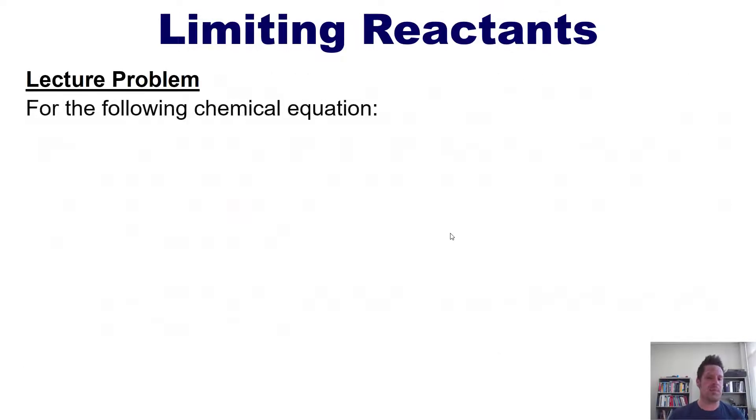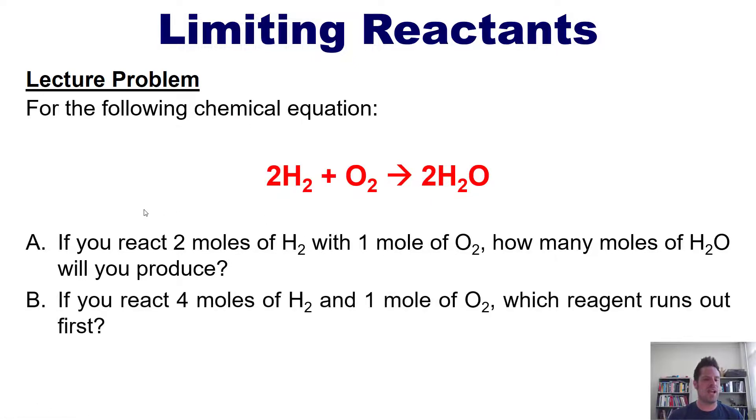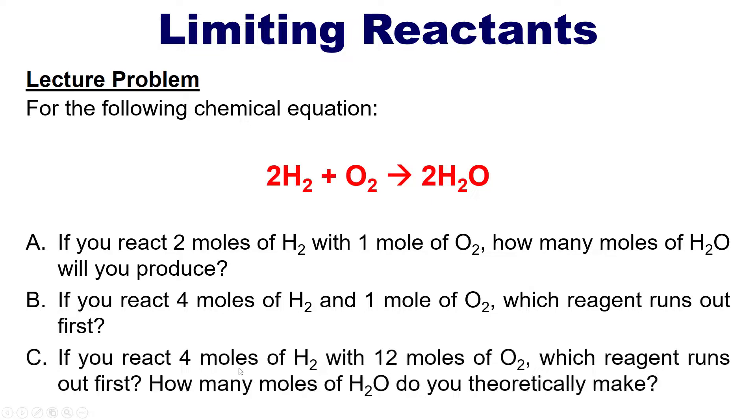Let's take a look then at another problem for this equation right here, which is balanced. If you react two moles of H2 with one mole of O2, how many moles of H2O would you produce? And separately, if you react four moles of H2 and one mole of O2, which reagent runs out first? And lastly, if you react four moles of H2 with 12 moles of O2, which reagent runs out first? And how many moles of H2O would you theoretically make? I invite you to attempt these on your own first. And then, if you like, you can watch my answer videos, which are linked to in the description below.